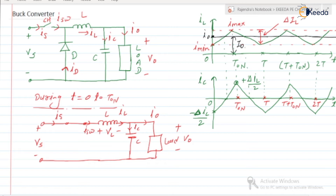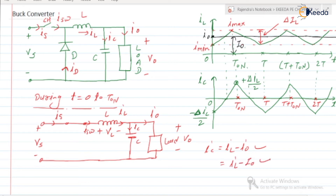During 0 to T_ON, the inductor is storing energy, so inductor current increases from I_min to I_max (starting from 0 for the first cycle, then I_min to I_max for continuous operation). I0 is constant — it is the average of I_min and I_max. Capacitor current IC = IL − I0.